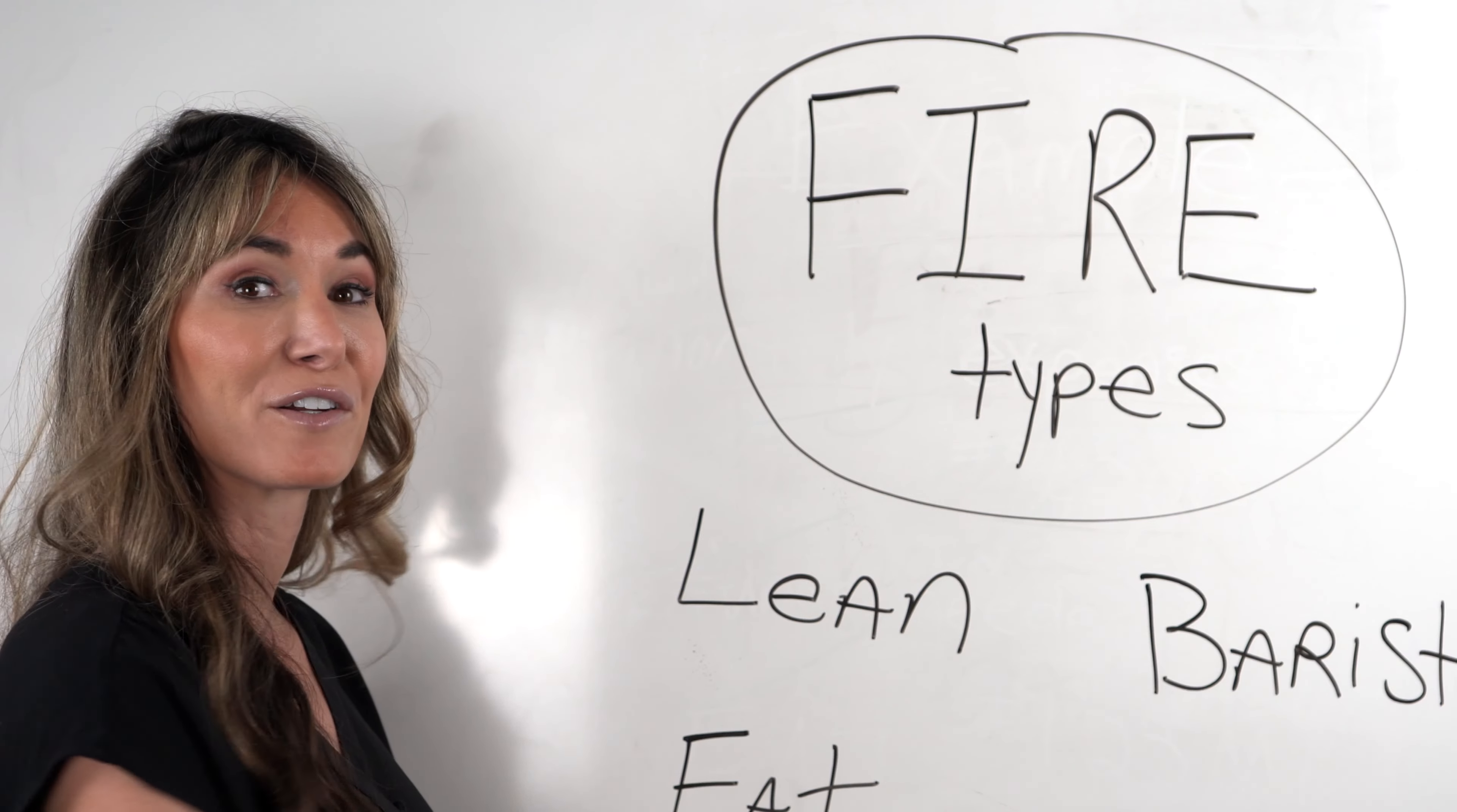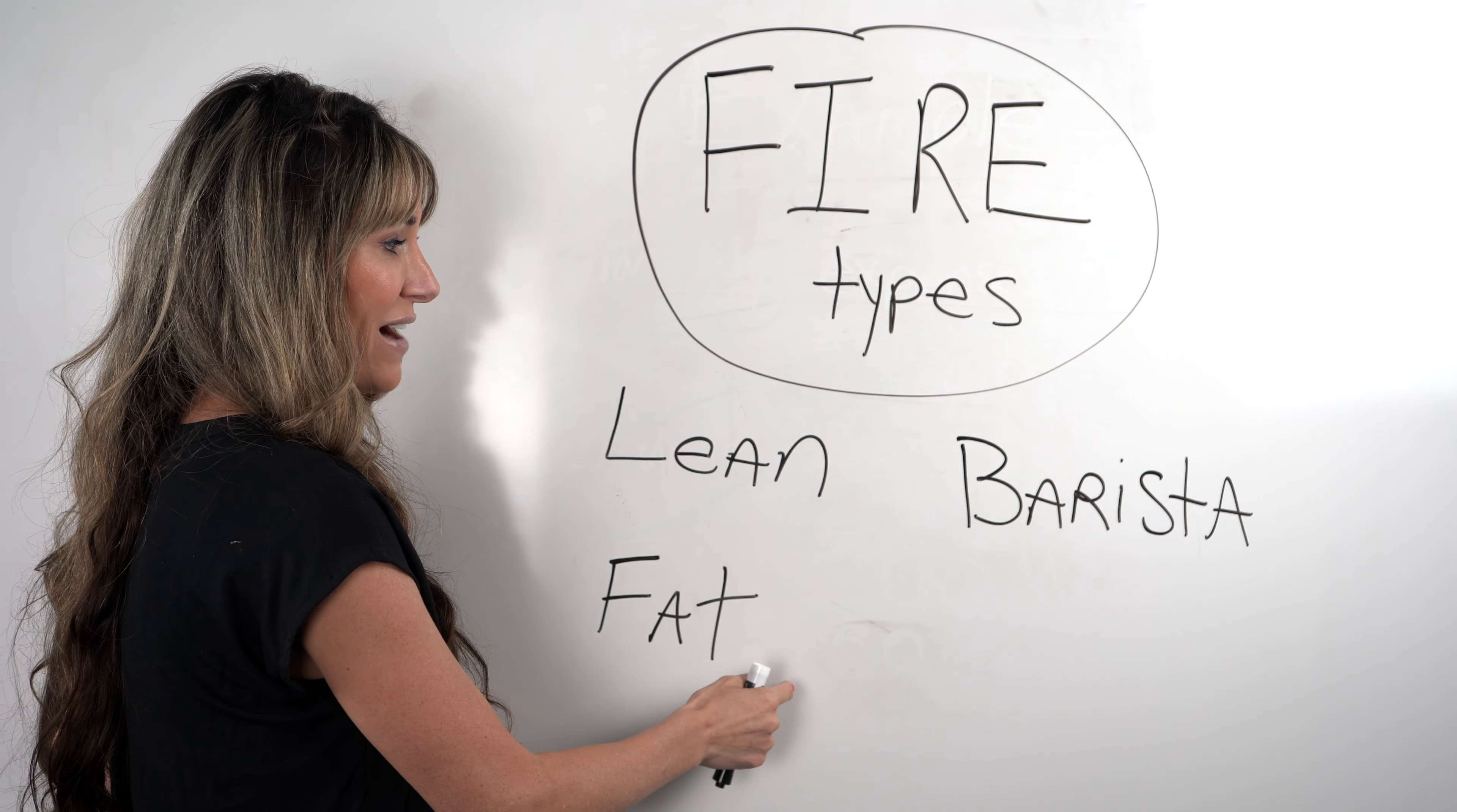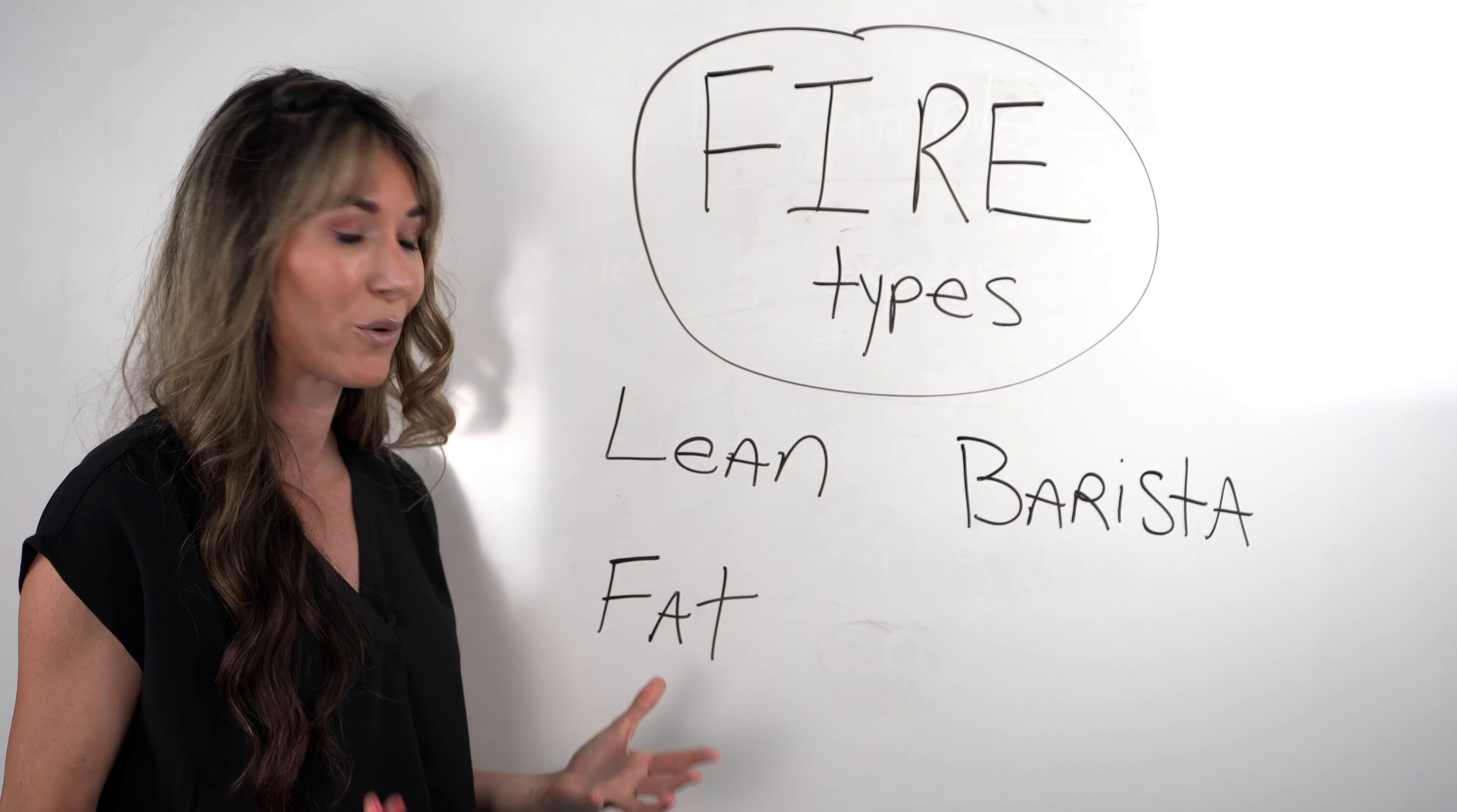So now let's talk about different FIRE types. There's generally three accepted different profiles, and I want to know which one that you are. So there's lean, there's fat, and then there's barista. With lean FIRE, this has an emphasis on frugality. You don't mind living way below your means because getting to retirement faster is more important.